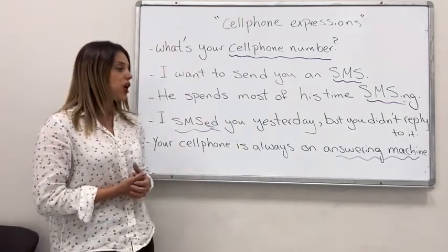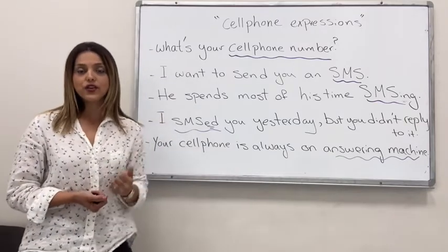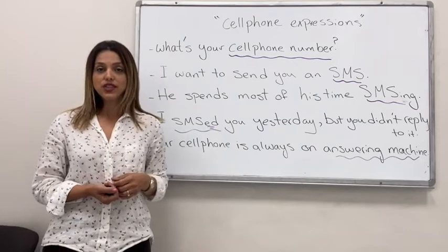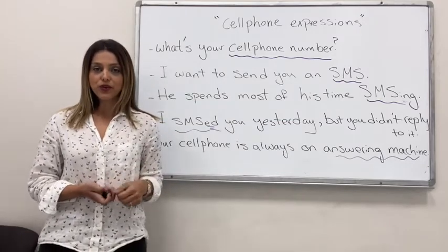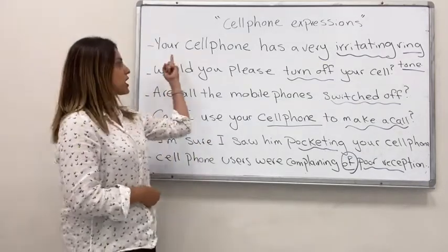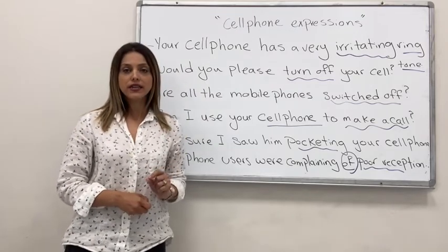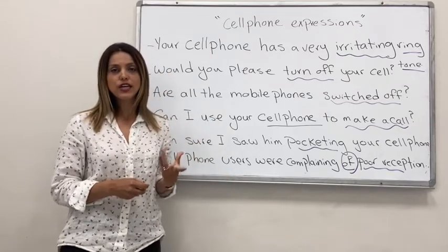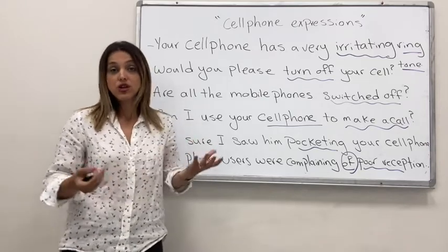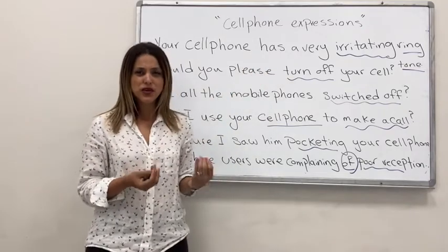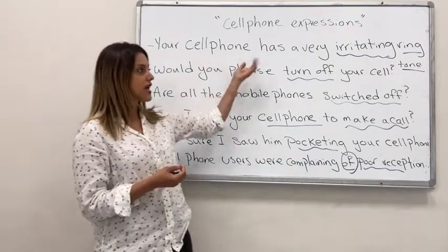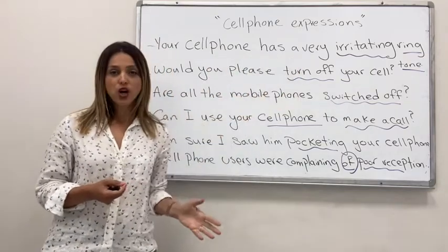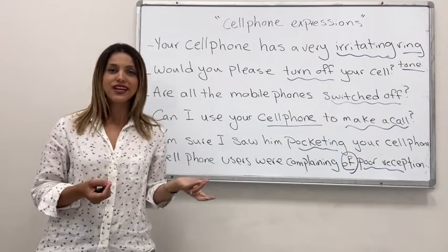Next: 'Your cell phone is always on answering machine — you never answer your phone. All the time when I call you, it's on answering machine and I have to leave a message.' Then look at this next expression: 'Your cell phone has a very irritating ringtone.' Sometimes a phone's ringtone is fine, but other times it bothers you a lot — it's so irritating. So you say the phone has a very irritating ringtone; it means I don't like the sound.